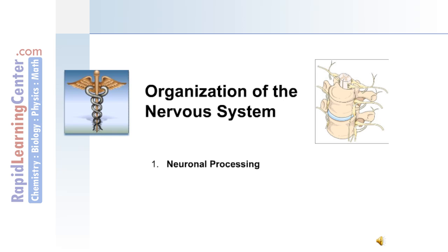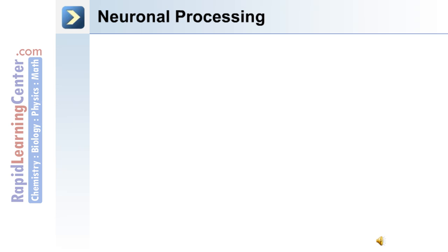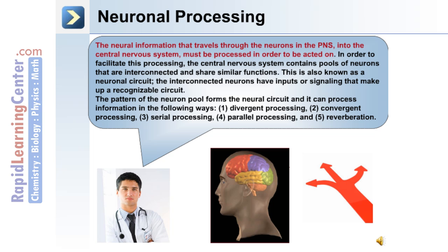Now let's move on to discuss organization of the nervous system, including neuronal processing. The neural information that travels through neurons in the peripheral nervous system into the central nervous system must be processed in order to be acted on. The central nervous system contains pools of neurons that are interconnected and share similar functions, also known as a neuronal circuit. The patterns of the neuronal pool form the neural circuit and can process information through divergent processing, convergent processing, serial and parallel processing, as well as reverberation.